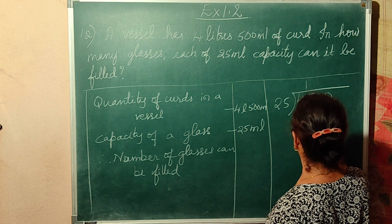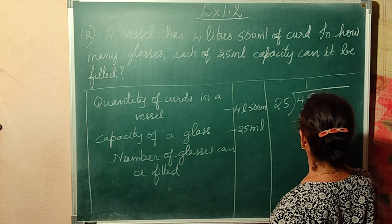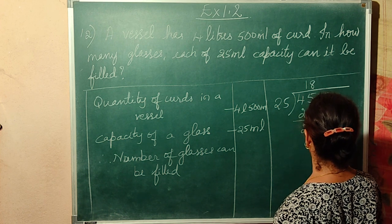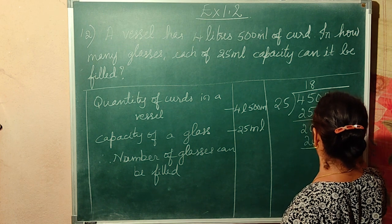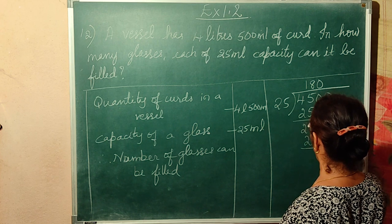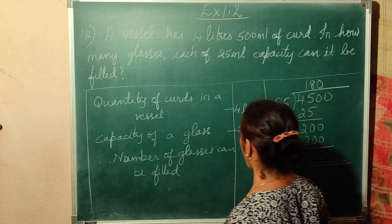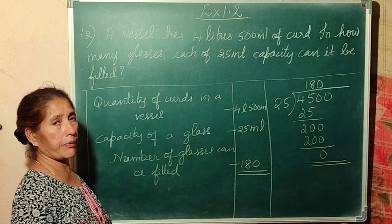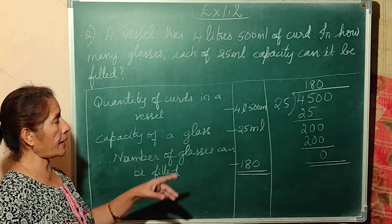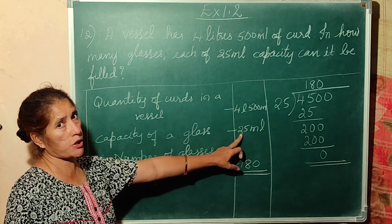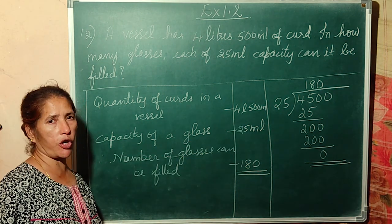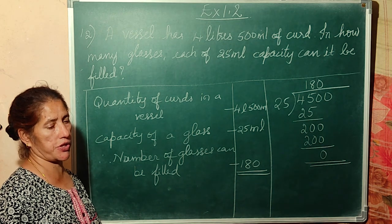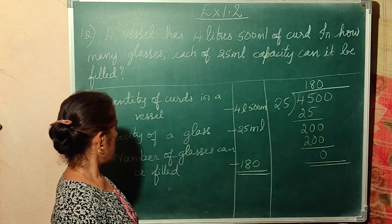4,500 divided by 25: 25 ones are 25; 45 minus 25 = 20; take another zero — 25 eights are 200; 200 minus 200 = 0; bring down zero — 25 zeros are 0. So 180 glasses can be filled. Total juice is 4,500 ml and each glass holds 25 ml capacity.